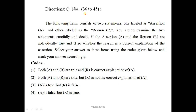From question number 36 to 45, the items consist of two statements: one labelled Assertion (A) and the other labelled Reason (R). Select option 1 if both A and R are true and R is the correct explanation of A. Select option 2 if both A and R are true but R is not the correct explanation. Select option 3 if A is true but R is false. Select option 4 if A is false but R is true.